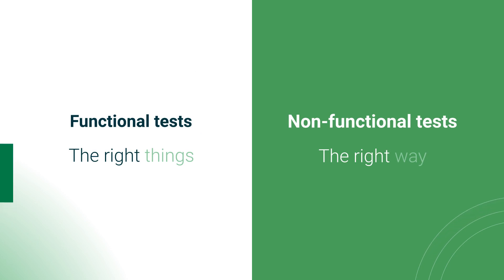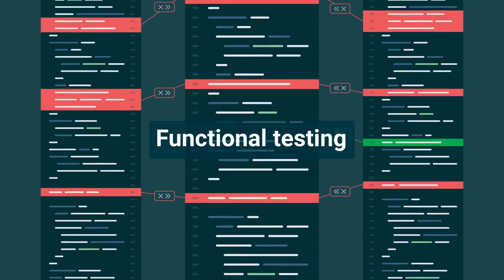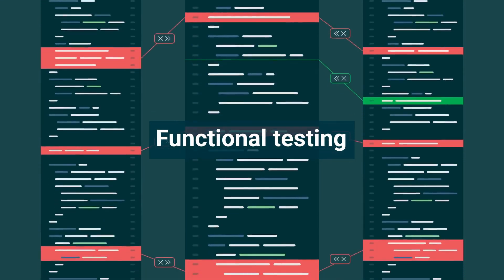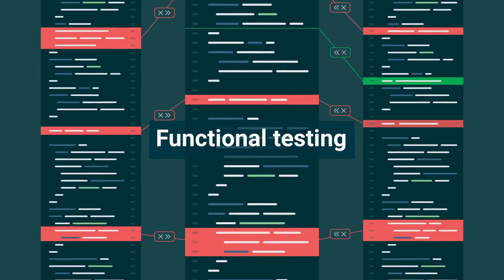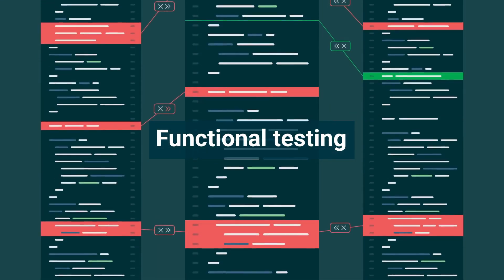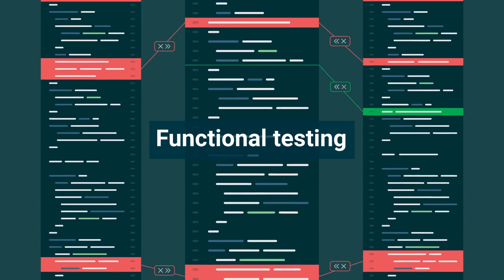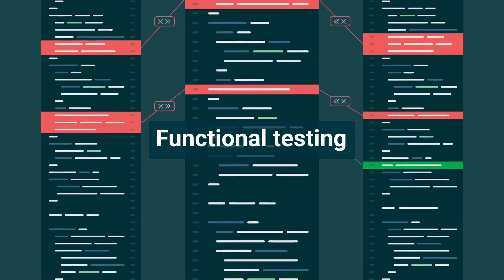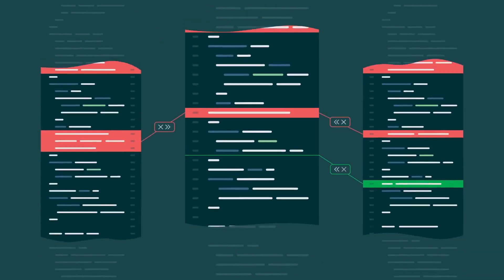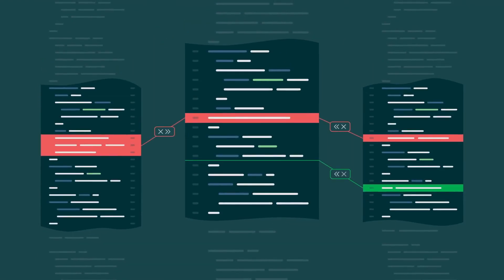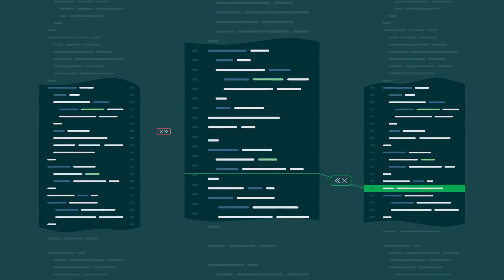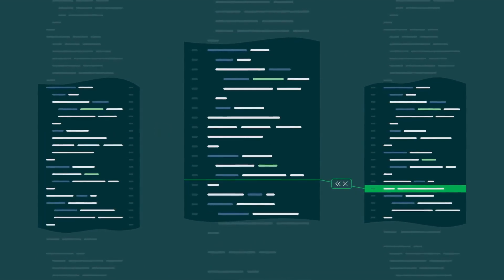Functional tests focus on checking the application's functionality against a set of specifications and includes testing portions of the underlying code. Functional testing is the more strictly necessary of the two categories. The problems these tests look for don't have workarounds — they need software-based solutions.